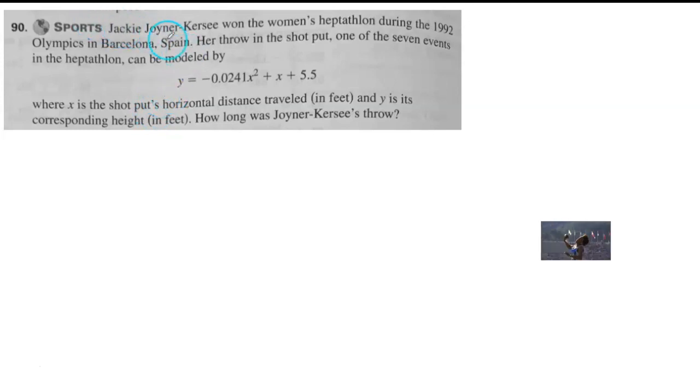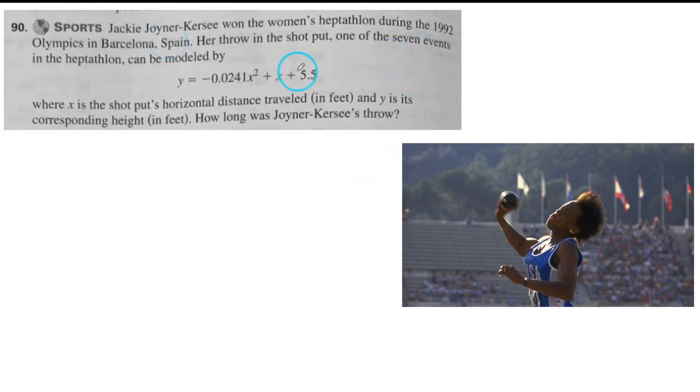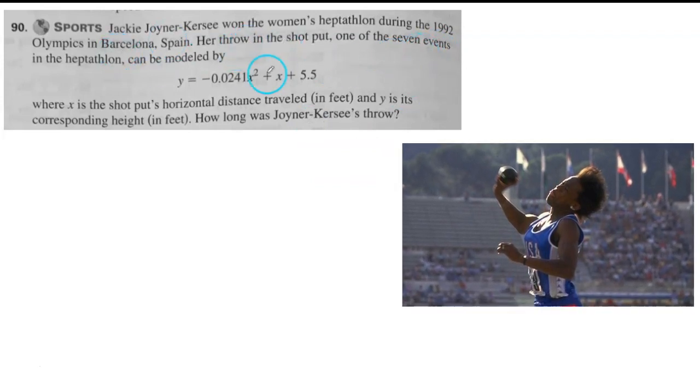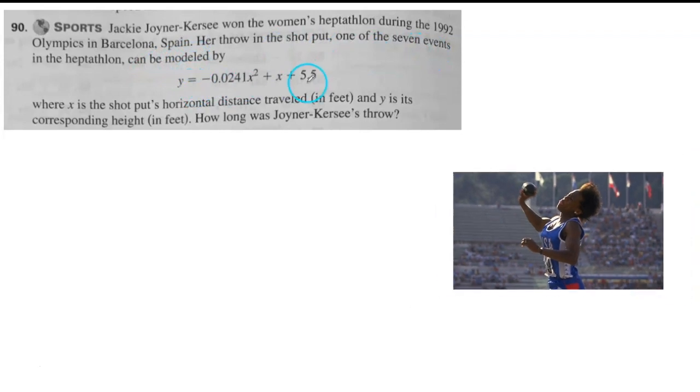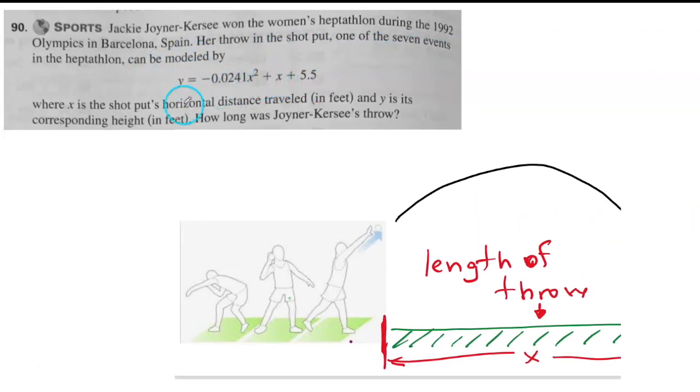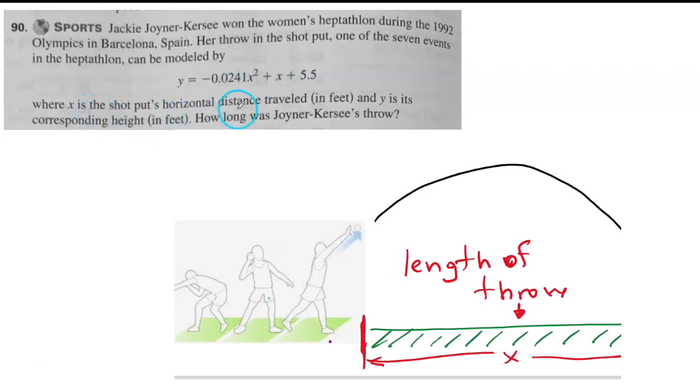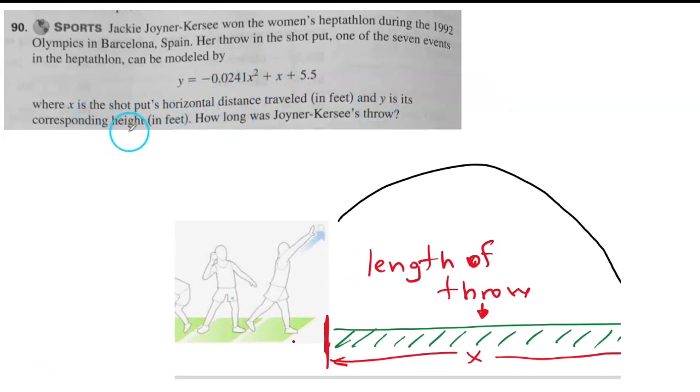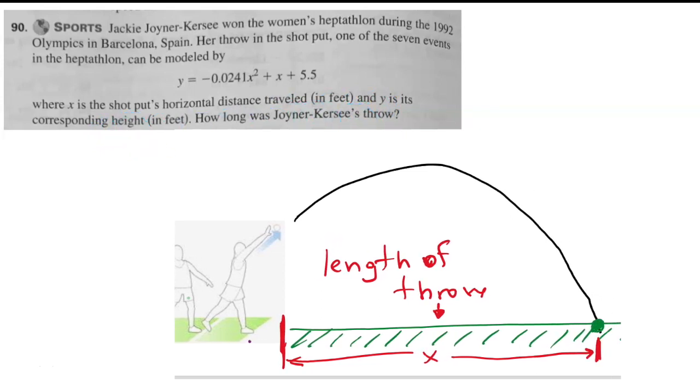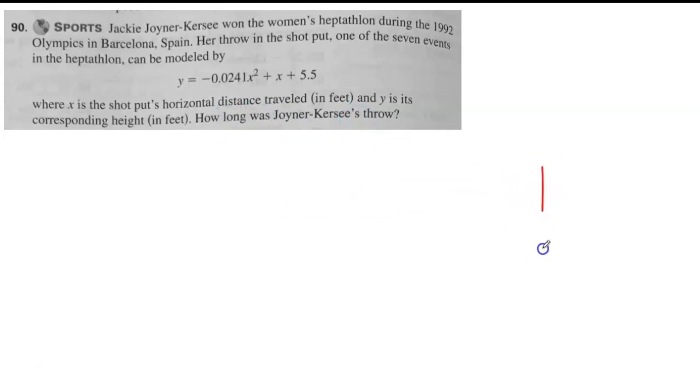First one: Jackie won the women's heptathlon during the Olympics. Her throw in the shot put can be modeled by this. The way she throws the shot put is a quadratic function. This is a quadratic standard form, negative leading coefficient.